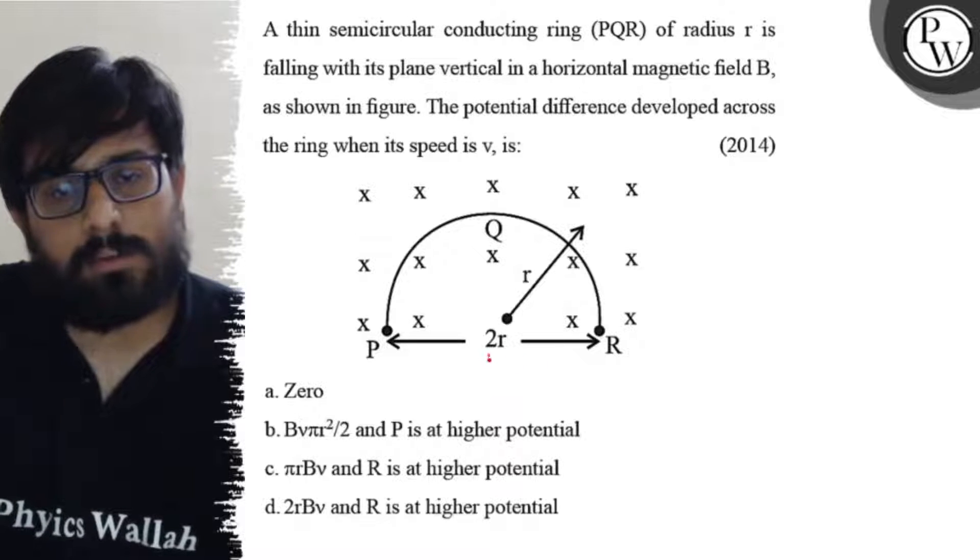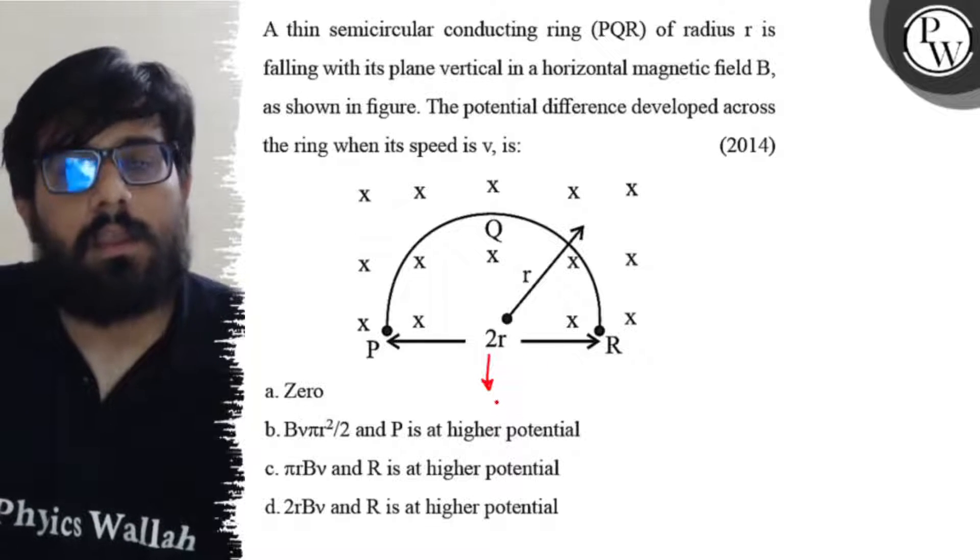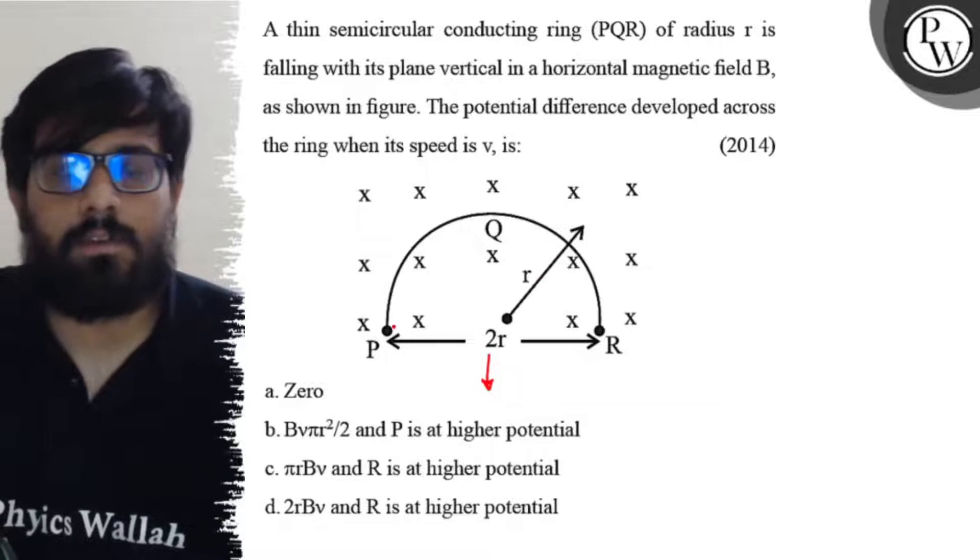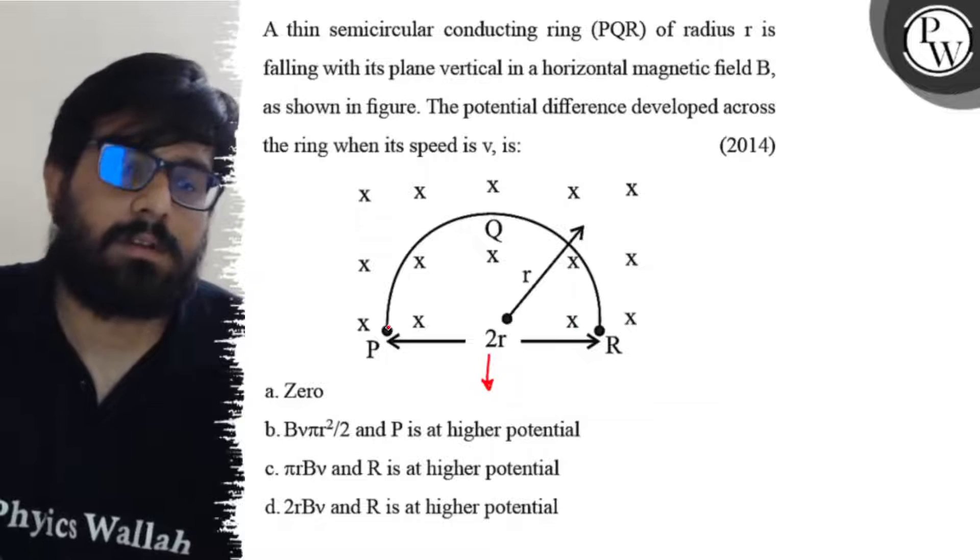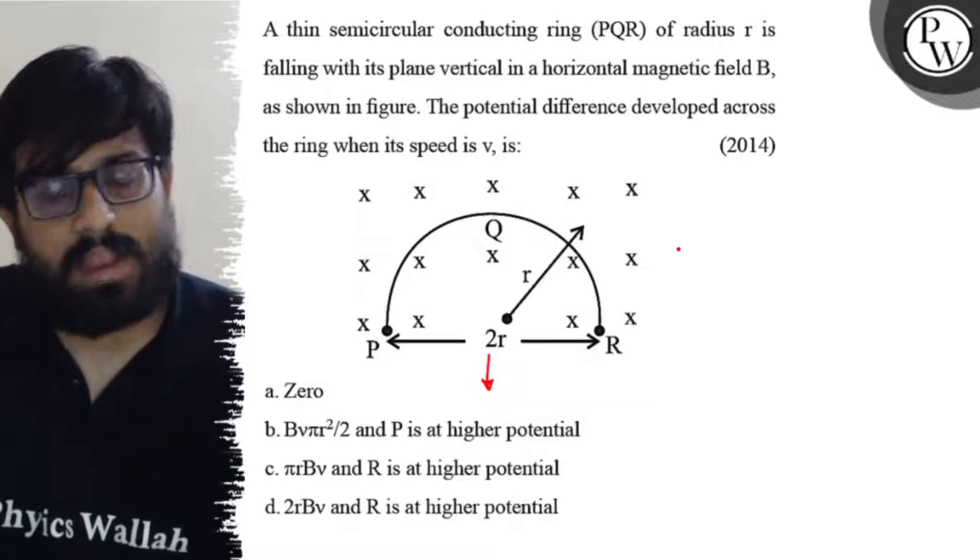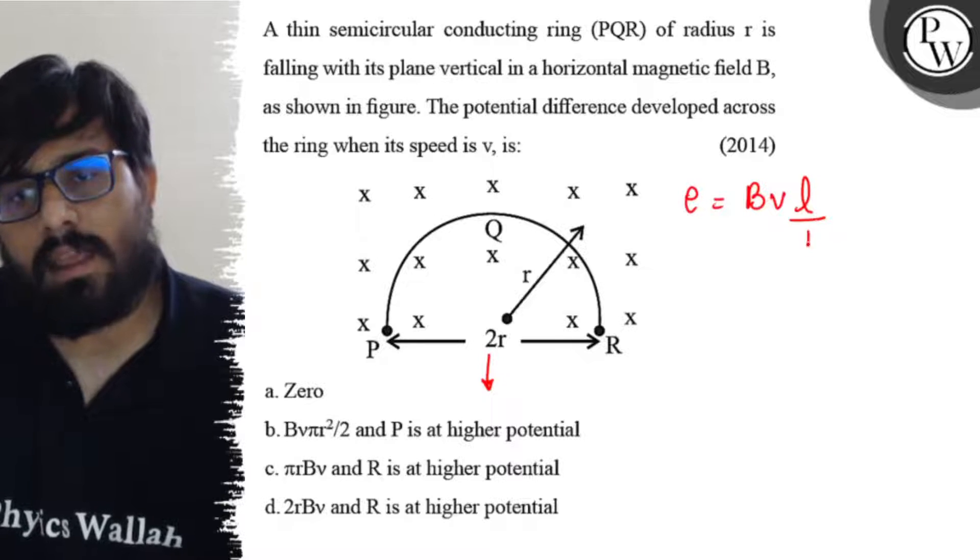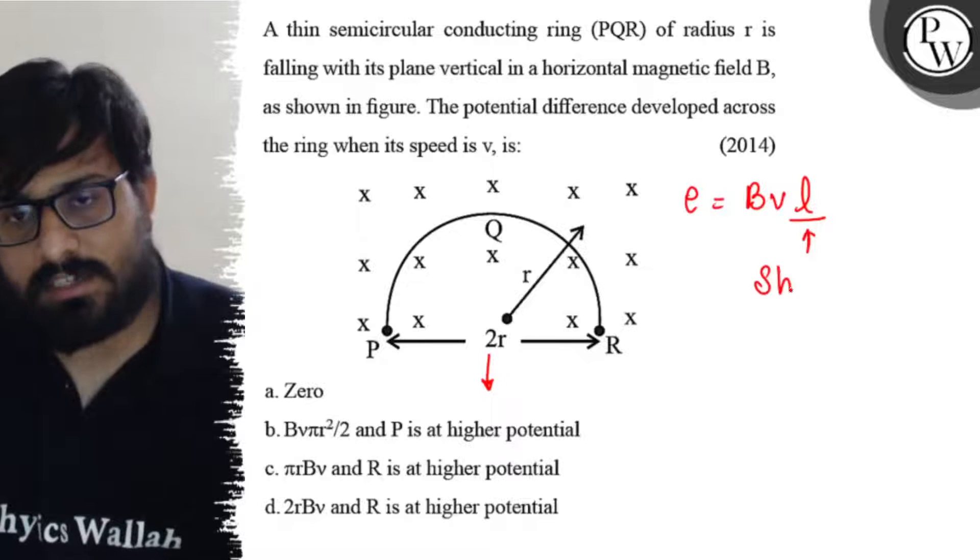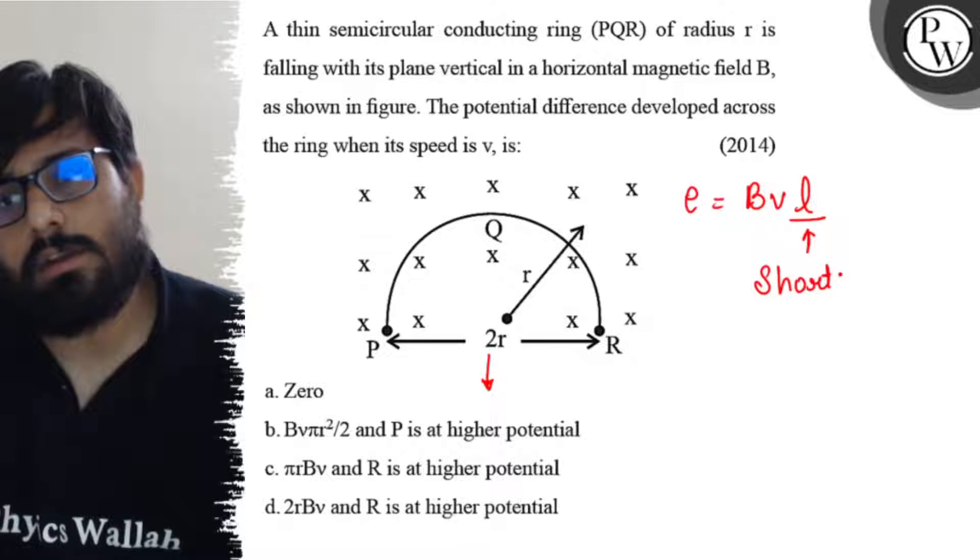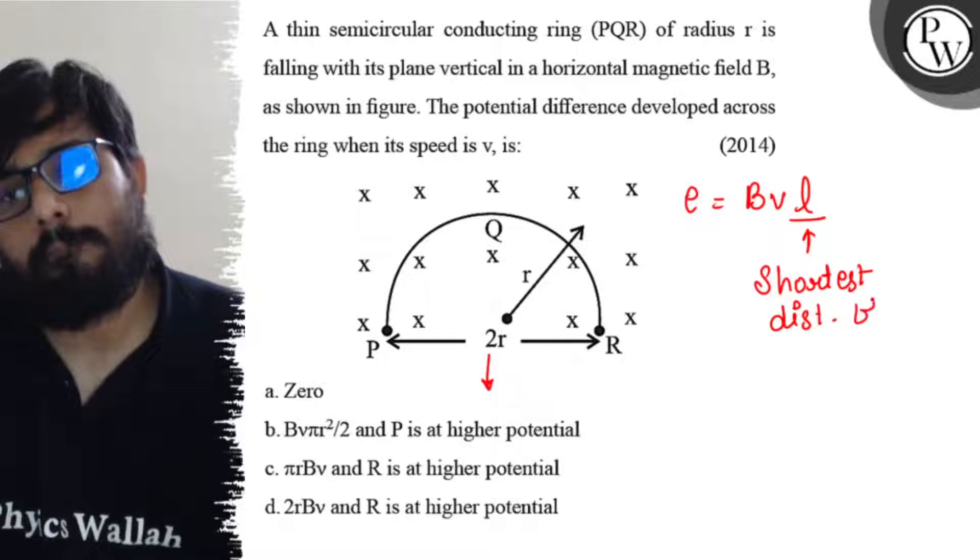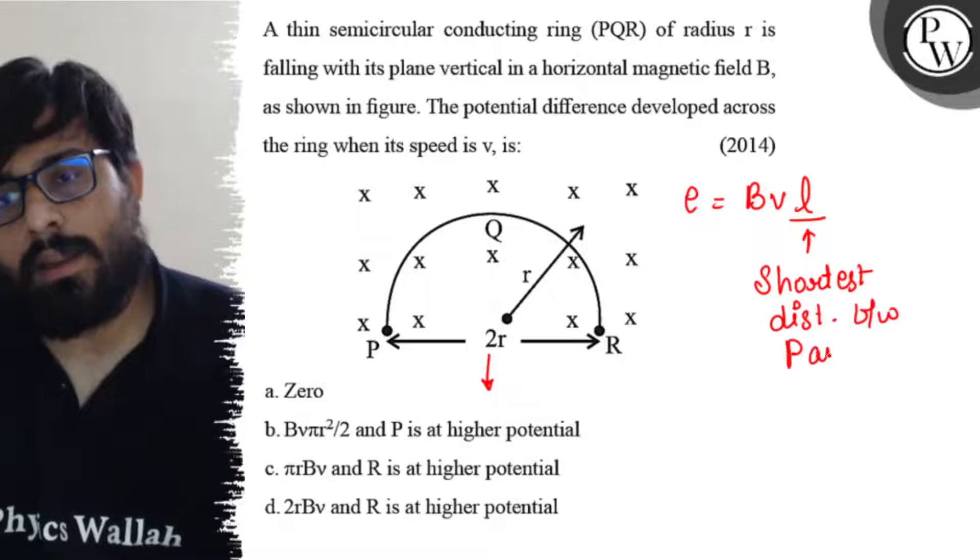The coil is falling down. For a non-uniform circular coil, or in this case a non-uniform rod, the induced EMF can be written as E = BVL, where L is the shortest distance between P and R.